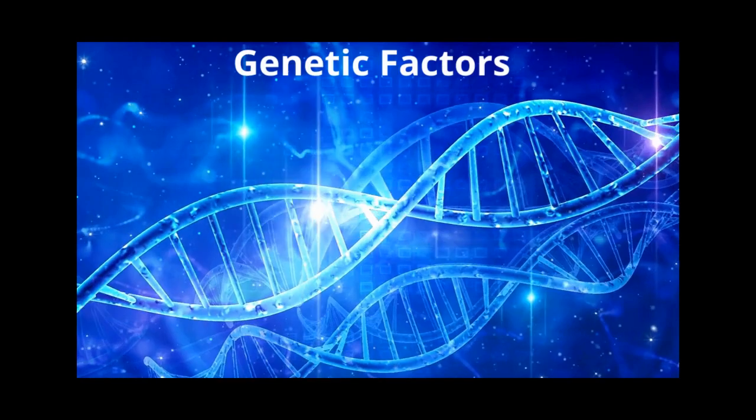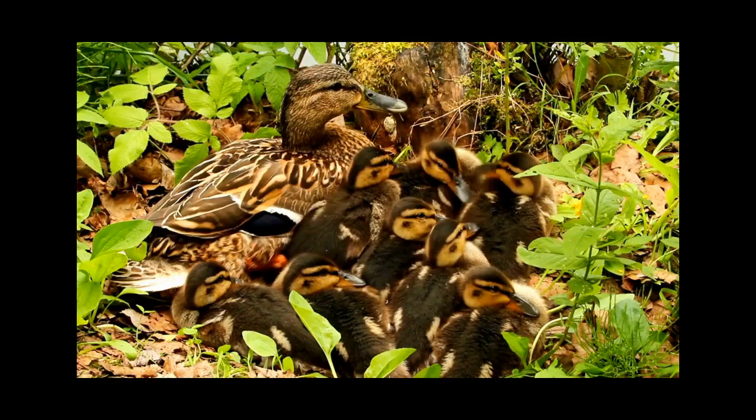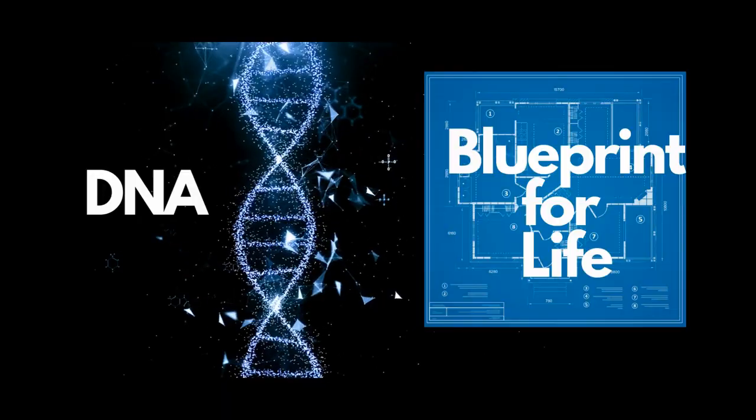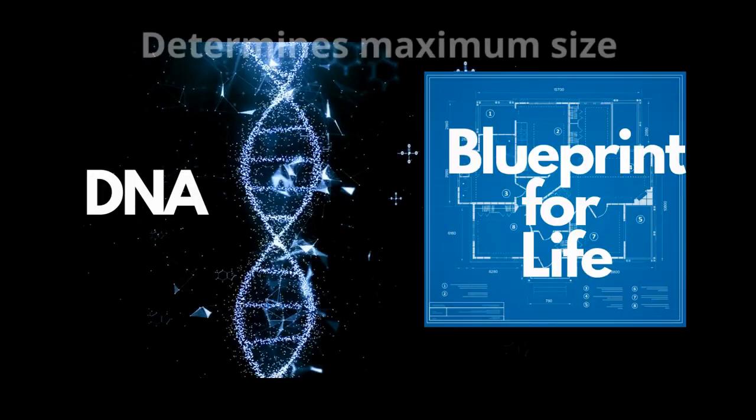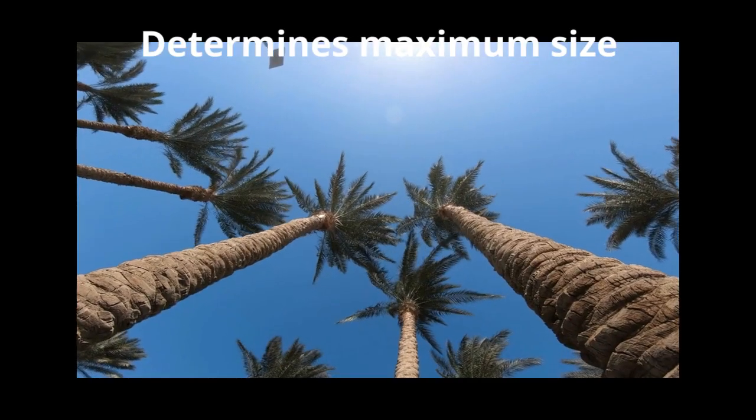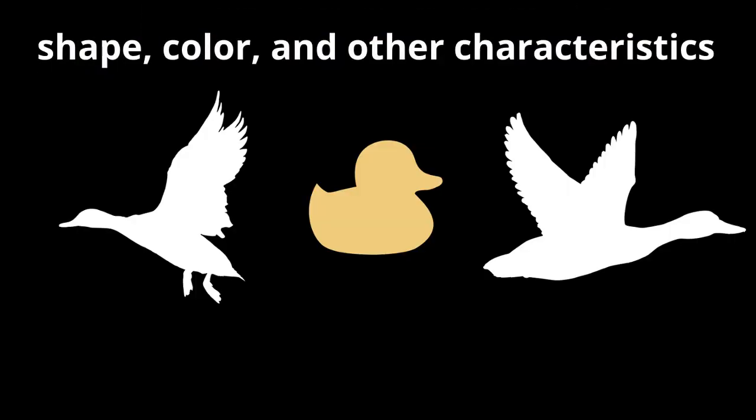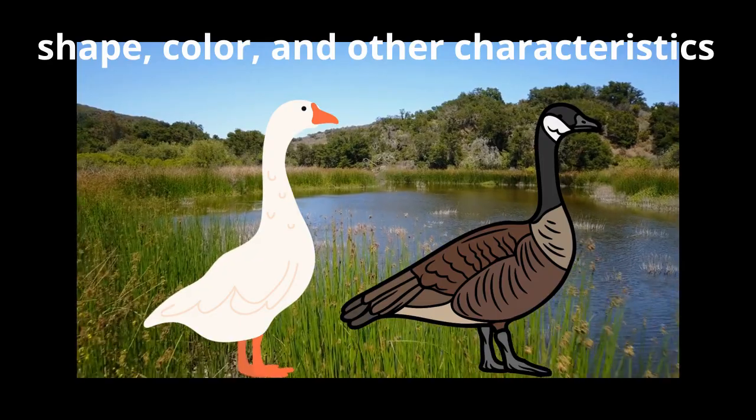Now, let's look at the other side: genetic factors. Every organism inherits DNA from its parents. Like a blueprint, this DNA determines the maximum size an organism can reach, how quickly it grows, and even its shape, color, and other characteristics.